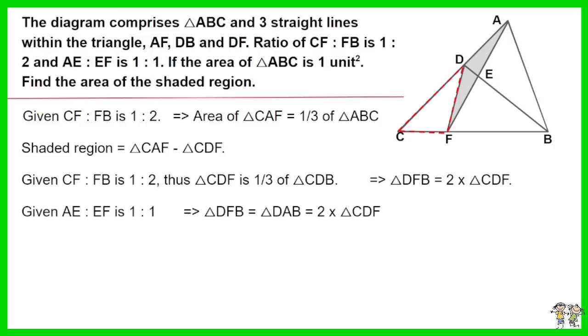Given the ratio of AE to EF is 1 to 1, thus triangle DFB equals triangle DAB equals 2 triangle CDF. As a result we have 5 triangle CDF equals triangle ABC. Therefore triangle CDF equals 1 fifth of triangle ABC.